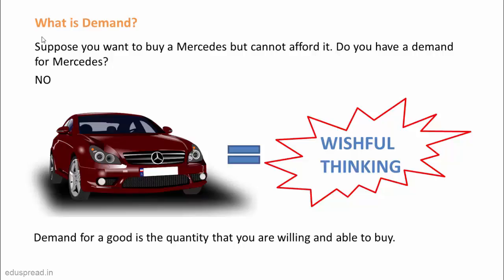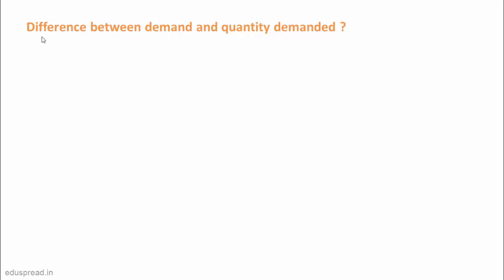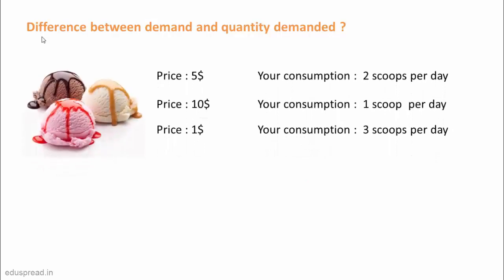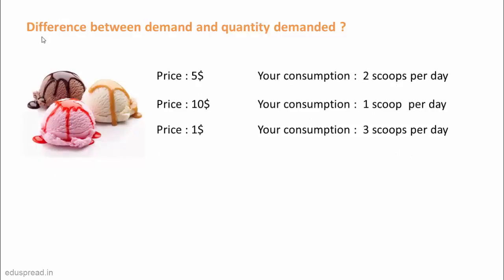Let's now understand the difference between demand and quantity demanded. Price plays a major role in deciding how much of a good we will buy. For example, if the price of an ice cream scoop is $5, you consume two scoops a day. When the price rises to $10, you might reduce your consumption to one scoop per day. And if the price falls to $1, you might increase your consumption to three scoops per day.